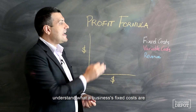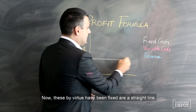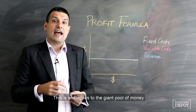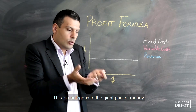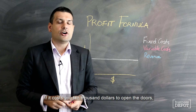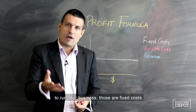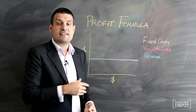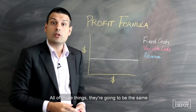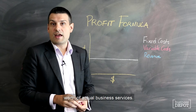The first step we need to do is understand what a business's fixed costs are. By virtue of being fixed, these are a straight line. This is analogous to the giant pool of money that you put on the roulette table at the start of every month as a business owner. If it costs you $10,000, $50,000, or a million dollars every month to run your business, those are fixed costs — things like your rent, most of your staff, a lot of expenses, overheads, leases, software. All of those things are going to be the same regardless of whether you sell a dime worth of actual business services.